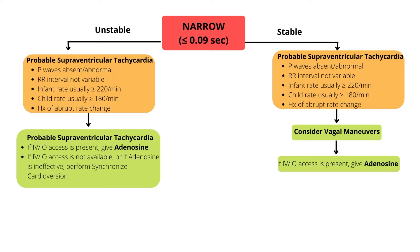Adenosine is the drug of choice for most common forms of SVT caused by a re-entrant pathway involving the AV node. For IV or IO route, give 0.1 mg per kg or a maximum first dose of 6 mg, not exceeding the adult first dose. If the first dose is ineffective, we may give a second dose of 0.2 mg per kg or a maximum of 12 mg, not exceeding the adult dose. Use a rapid bolus with a rapid flush of 5–10 ml of normal saline using a 2-syringe technique. Usually one person will be pushing the adenosine while a second person will push the flush following the adenosine.